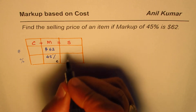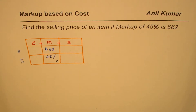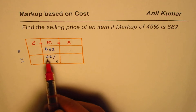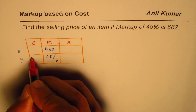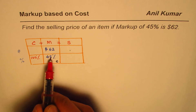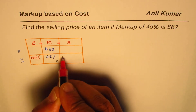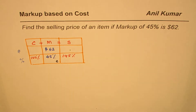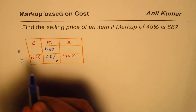We need to find what the selling price is — that's the question. You can pause the video, answer the question, and then check against my solution. Now, remember: markup is based on the cost price, therefore we take 100% of the cost price. If cost is 100%, then the selling price will be 100 plus 45, which is 145%.